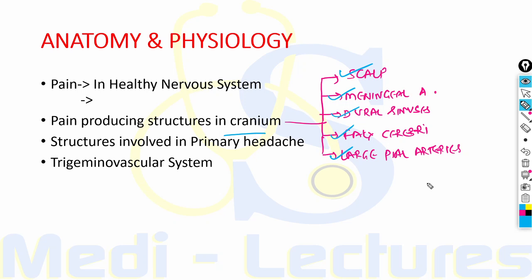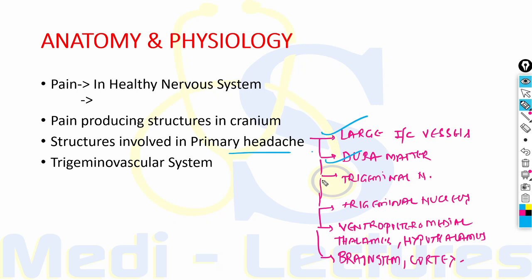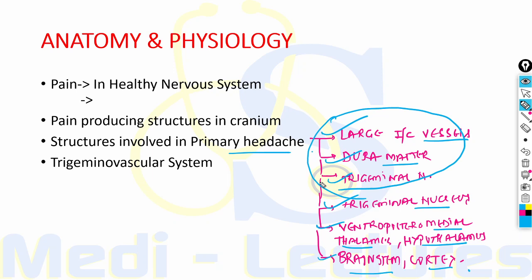The structures involved in primary headache are large intracranial vessels, dura mater, the trigeminal nerve innervating these structures, the trigeminal nucleus, the caudal part of trigeminal nucleus, then ventroposteromedial thalamus, hypothalamus, brainstem and cortex. These intracranial vessels, dura mater, and the trigeminal nerve together form the trigeminal vascular system.